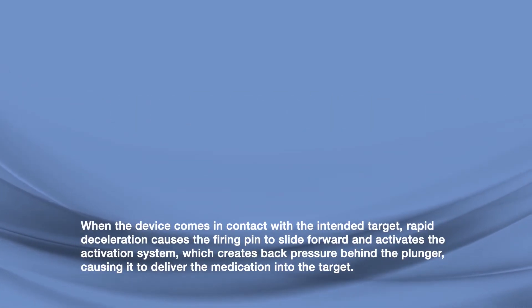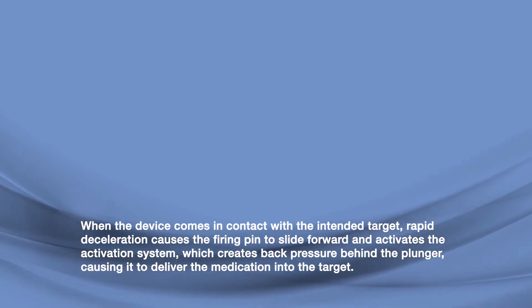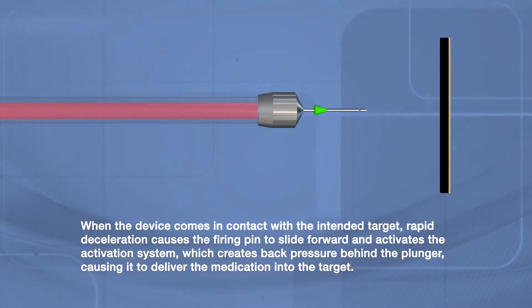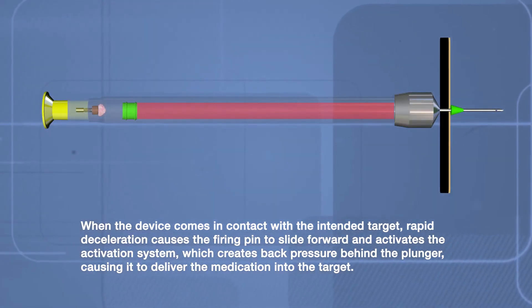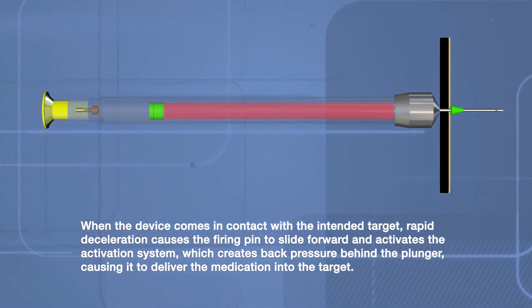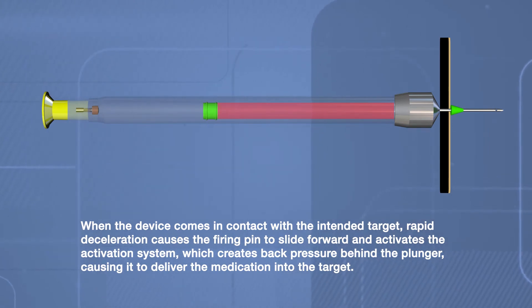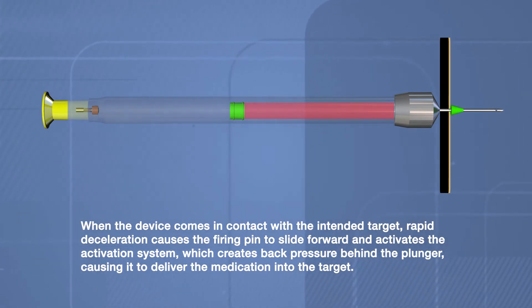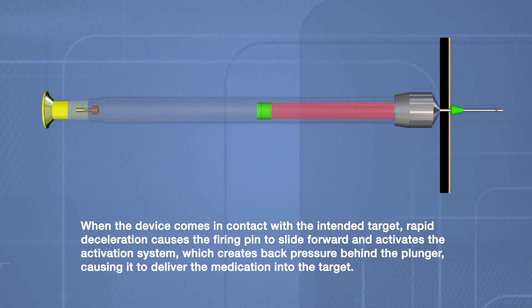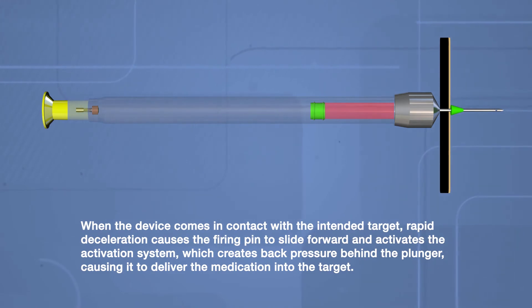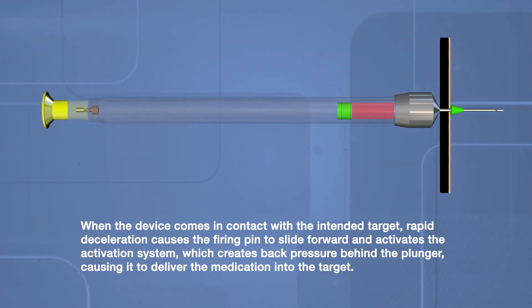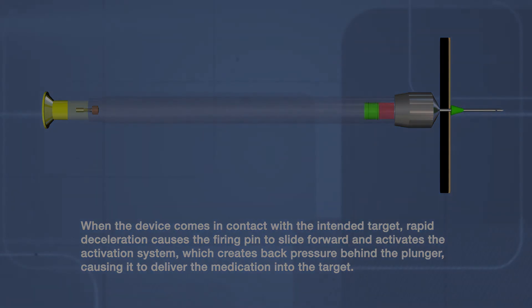When the device comes in contact with the intended target, rapid deceleration causes the firing pin to slide forward and activates the activation system, which creates back pressure behind the plunger, causing it to deliver the medication into the target.